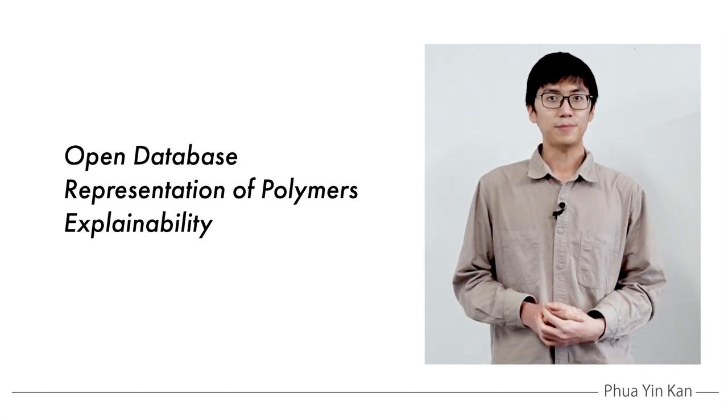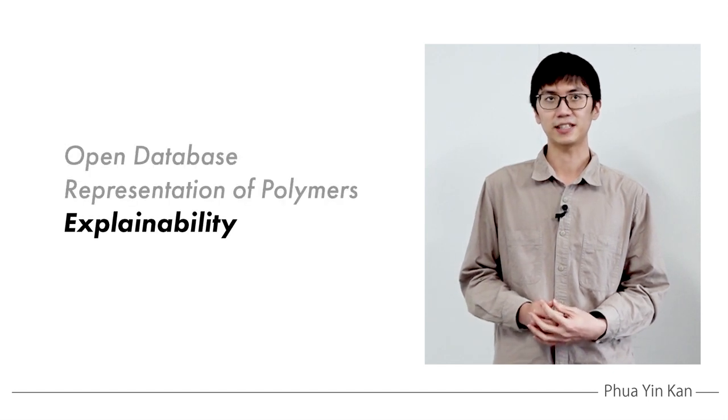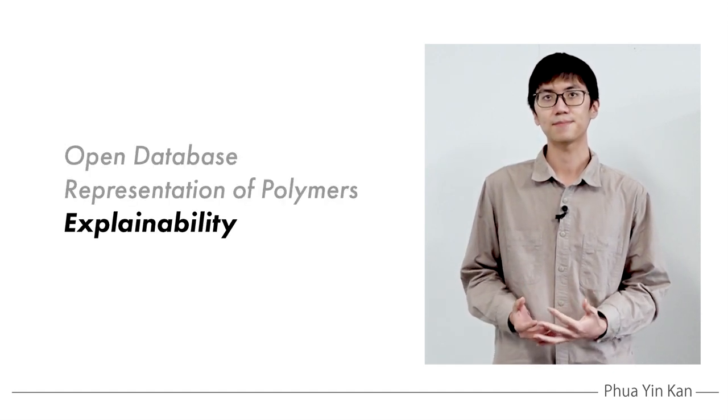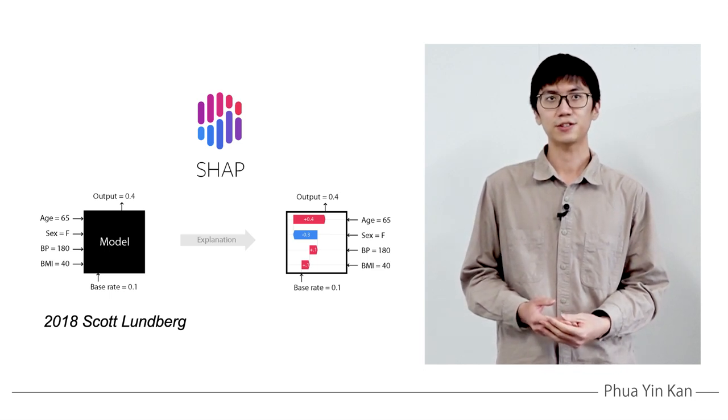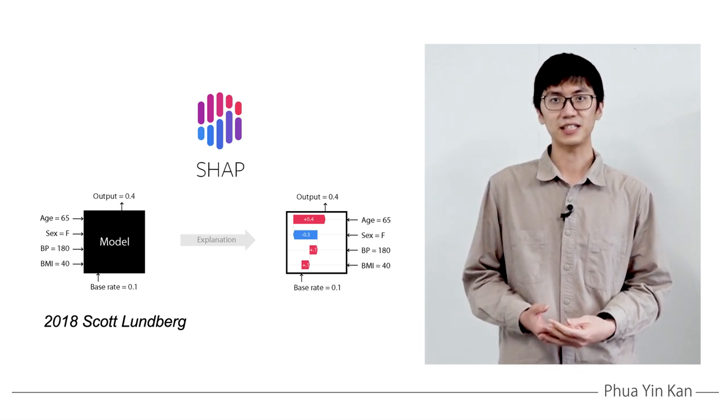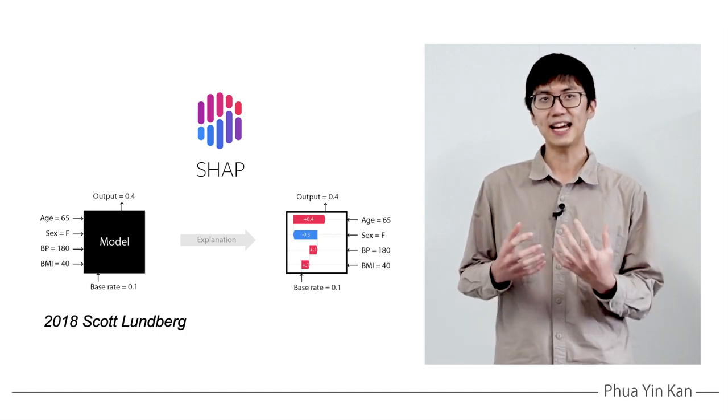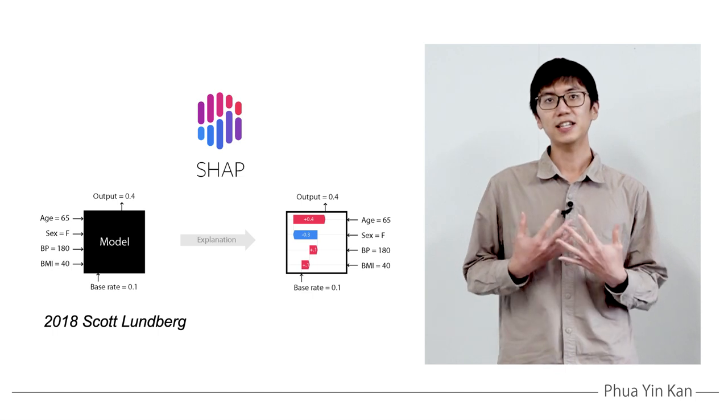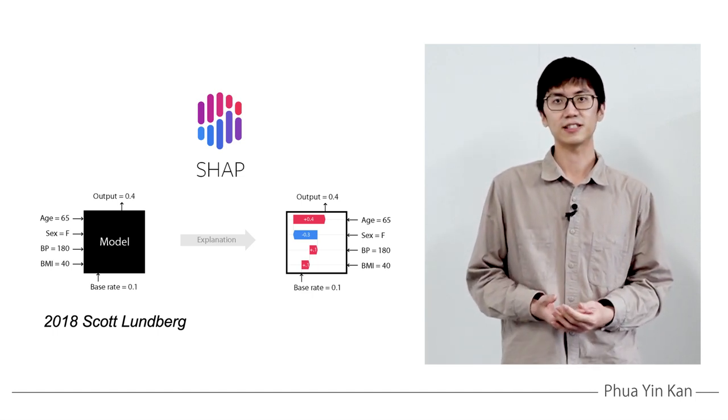In our previous study, we mainly focused on increasing the explainability of machine learning models using SHAP values. SHAP values calculate the influence of each feature towards the prediction value for the material. And most importantly, they can be extracted and analyzed. This gave us an idea on which features are important and which are not.